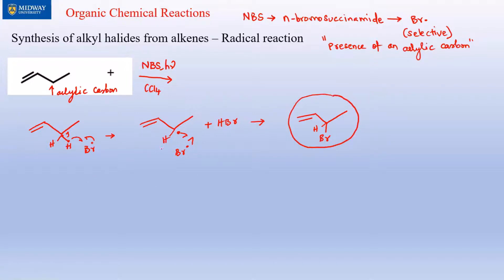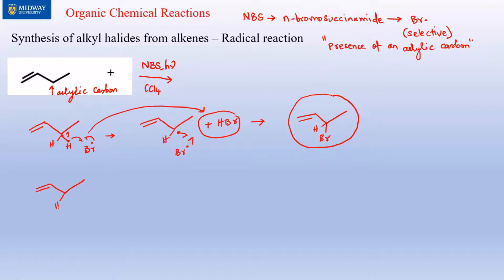But this doesn't have to end here — the cycle can continue. The Br• from a new radical step reacts again. It's not the HBr reacting again; it's a fresh Br• that drives the chain forward. That's how we do organic chemistry.